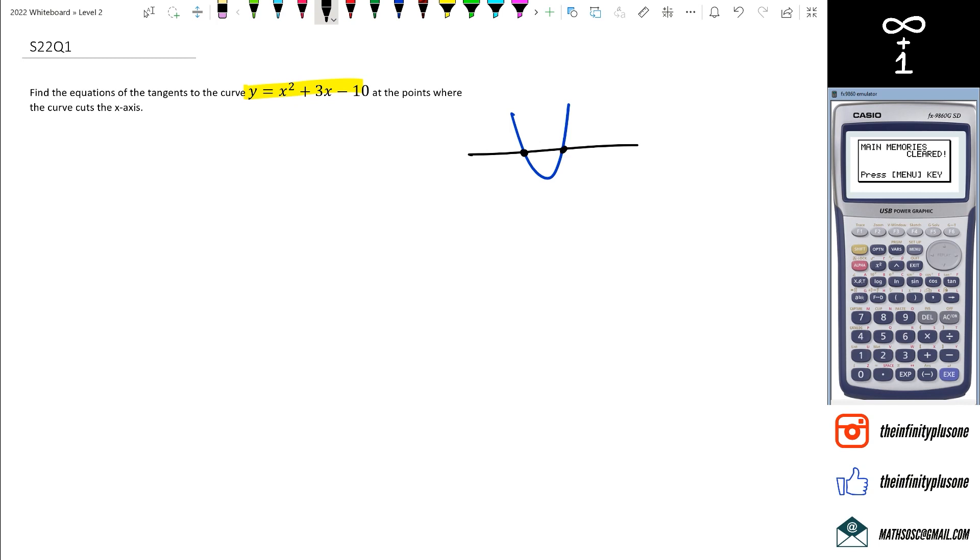Once we do that, then the next part is working out the equations of the tangents. So the tangents are those lines that are going to go touching that point, right? So those highlighted in green, those are the tangents. So we're going to end up with two equations at the end of this question, because we've actually got two tangents. So the first step is to figure out what these two points are.